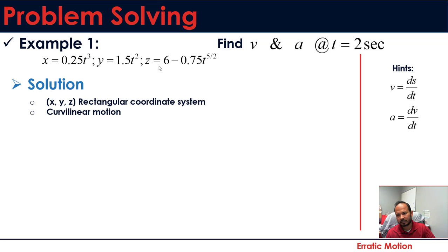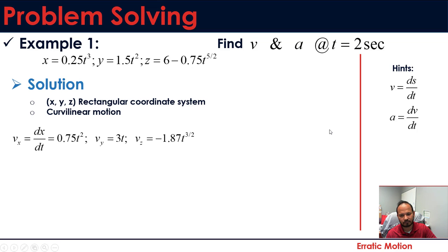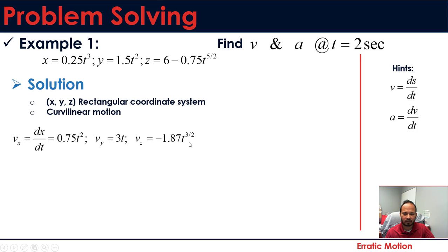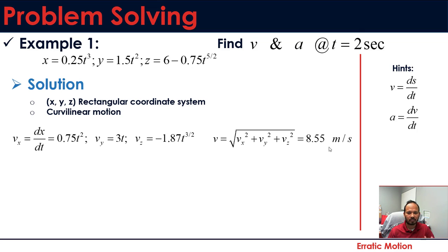To solve, we use the definition that velocity is ds/dt and acceleration is dv/dt. Taking the first derivative of x gives vx, the first derivative of y gives vy (which is 1.5 × 2t), and the first derivative of z gives vz. Plugging in t = 2 into all components, then taking the square root of the sum of squares, gives the velocity magnitude: 8.55 meters per second. Try these steps yourself and check your answer.